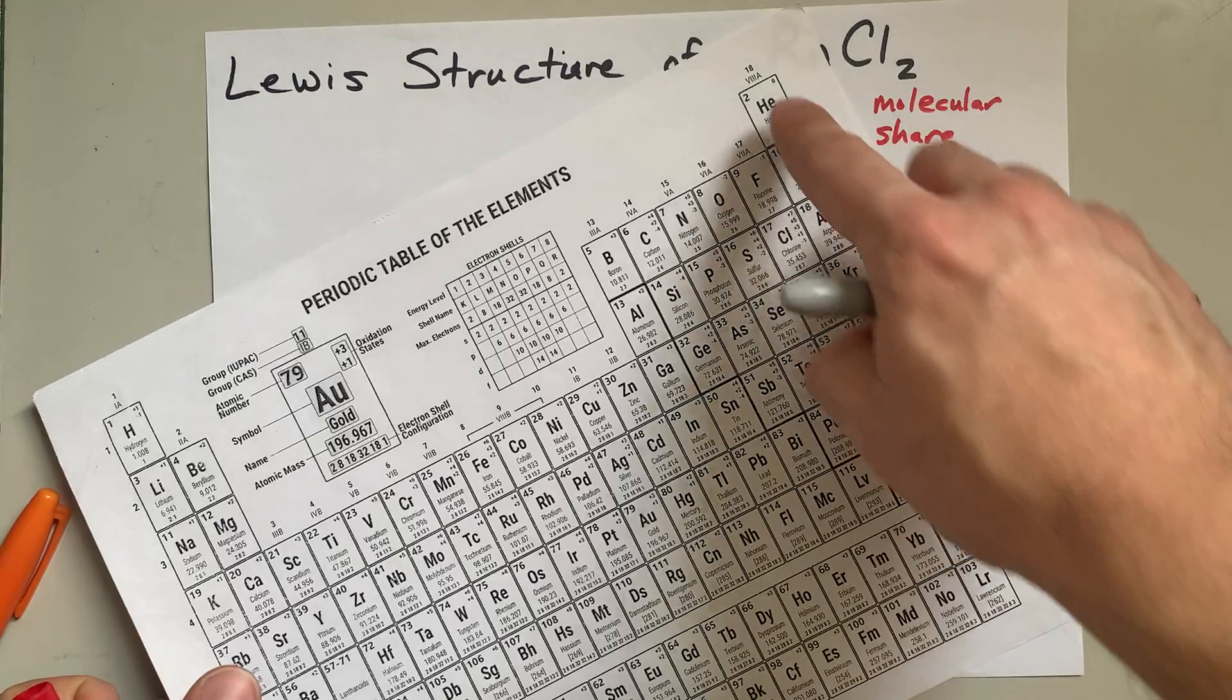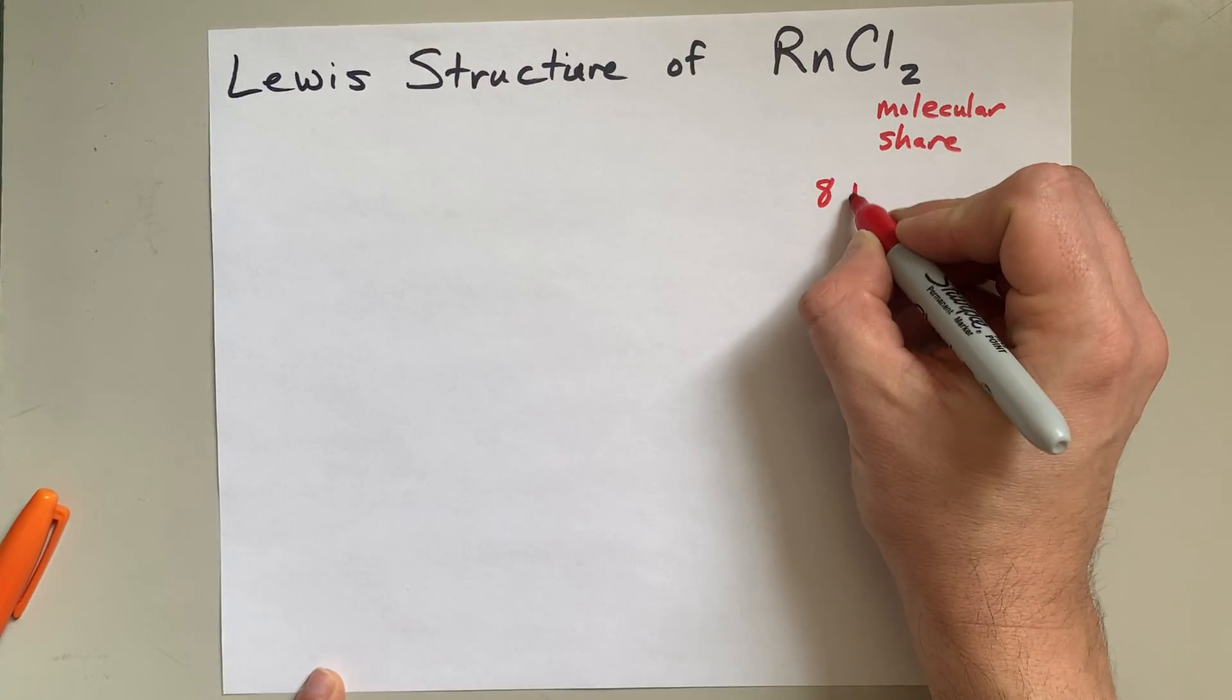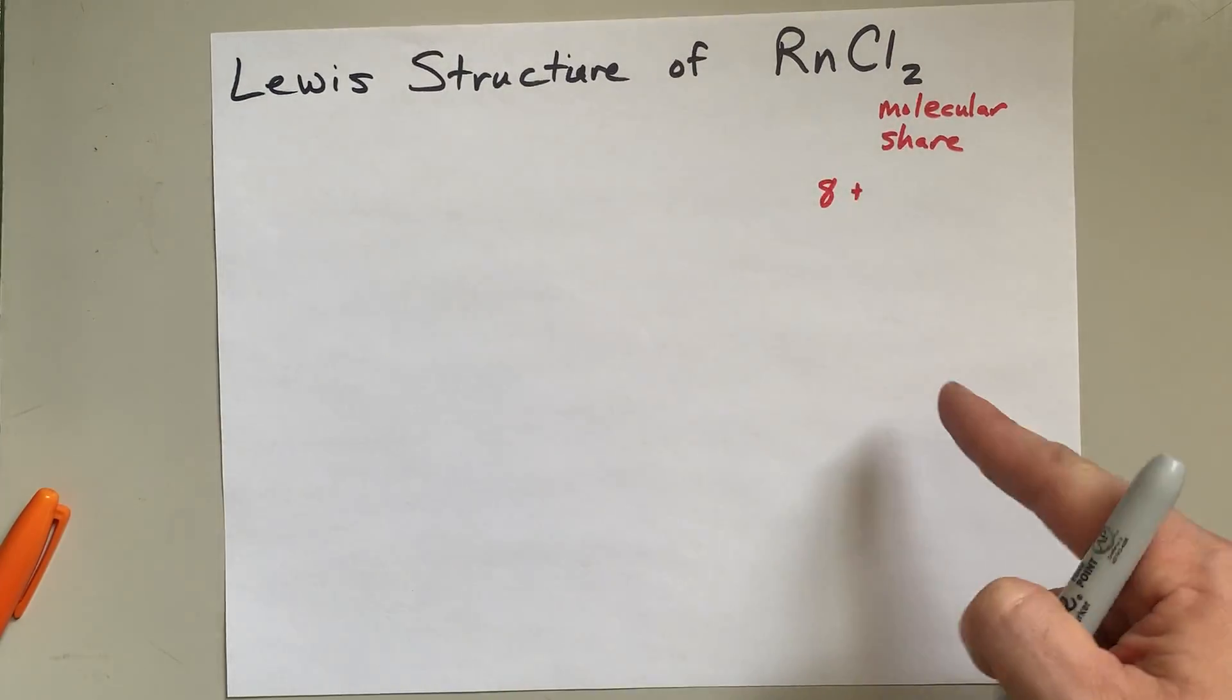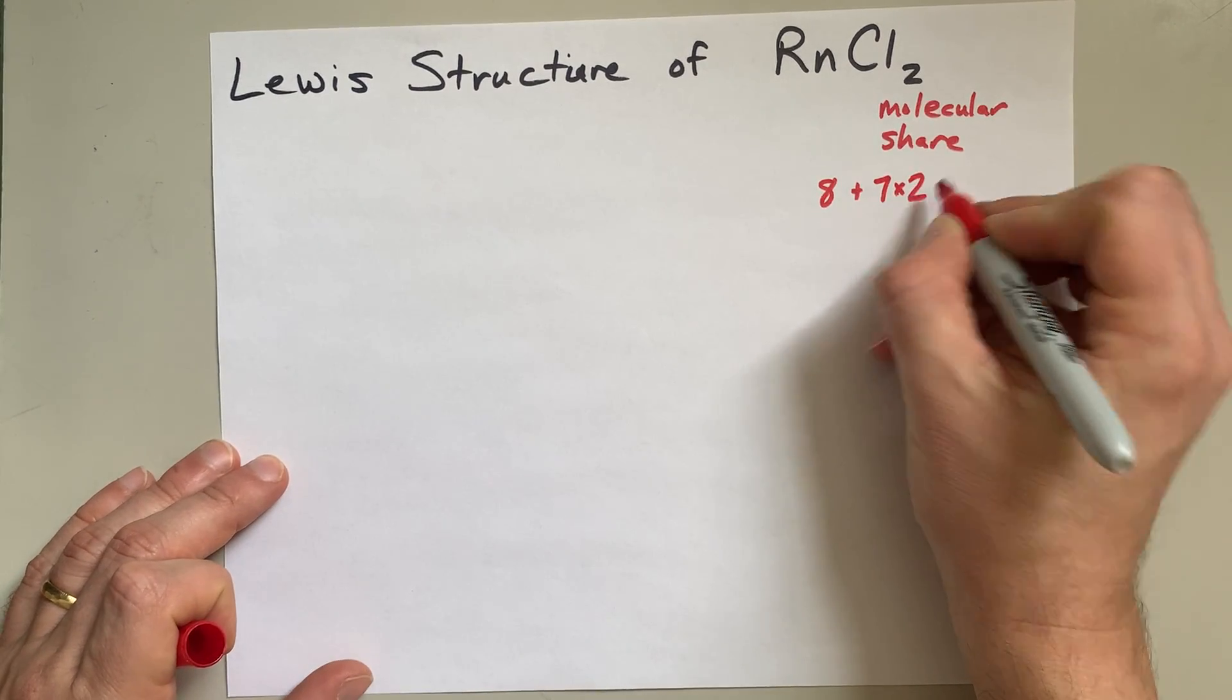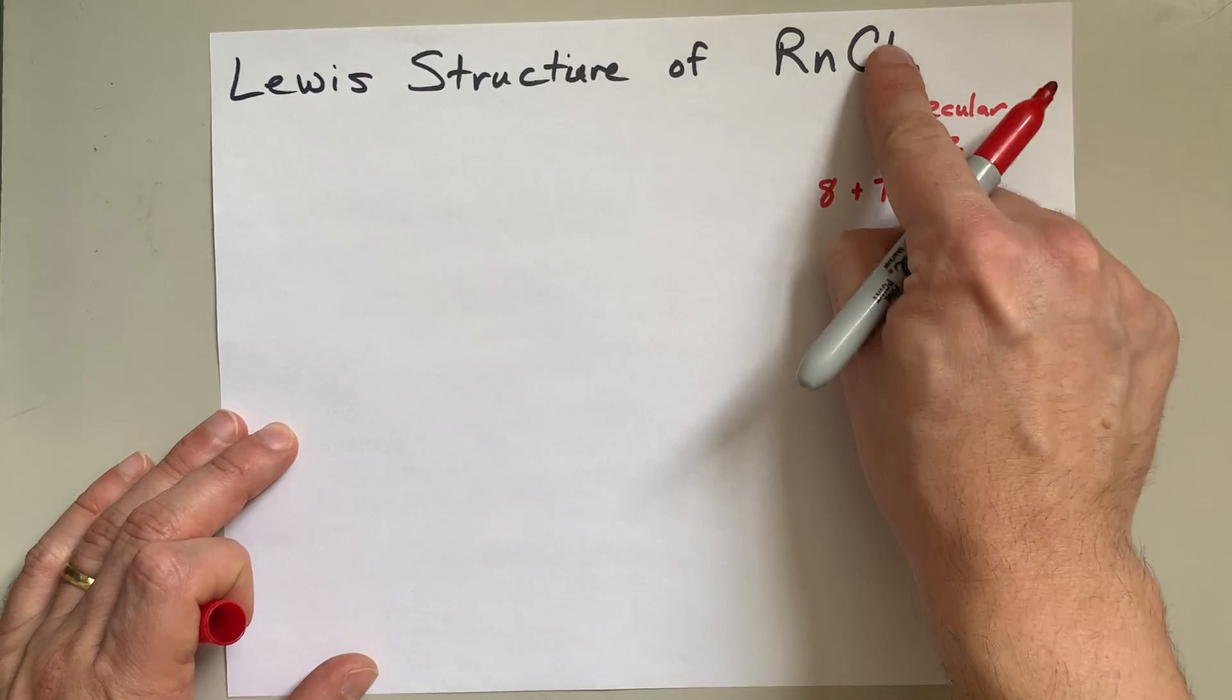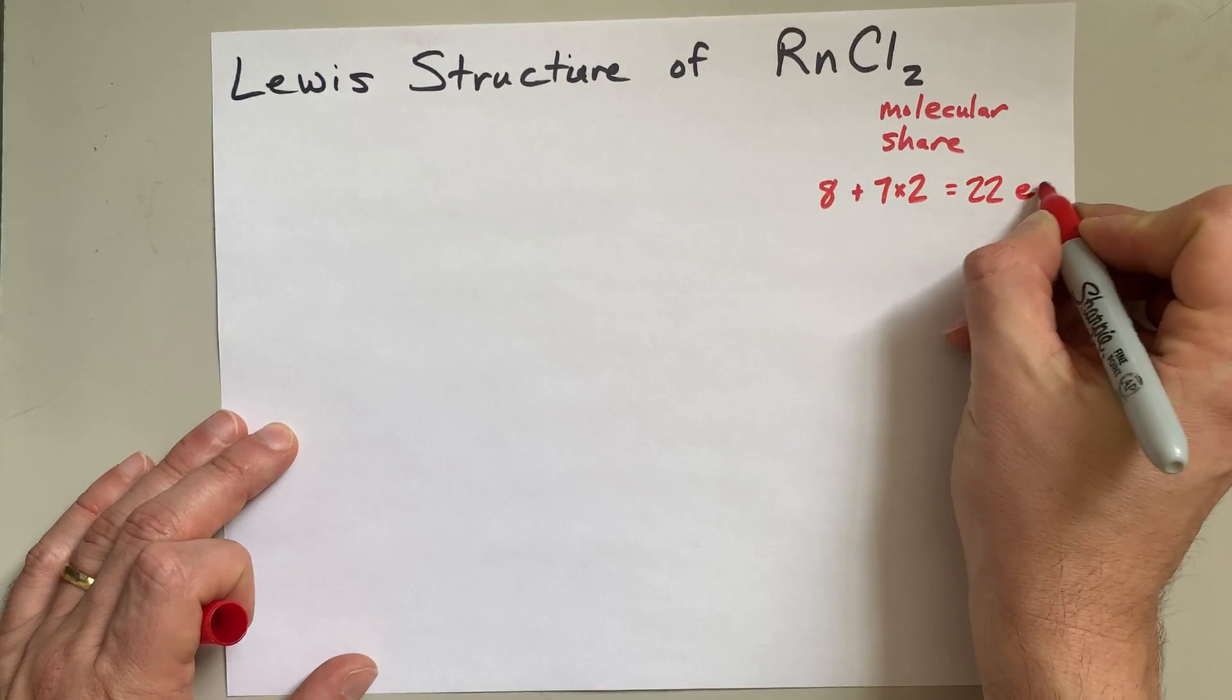Radon is in group 18, so it brings 8 valence electrons with it. Chlorine is in group 17, so each of those chlorines brings 7 valence electrons. But again, there's 2 of them. So that's 14 from the chlorines and 8 from the radon, which is 22 electrons total.